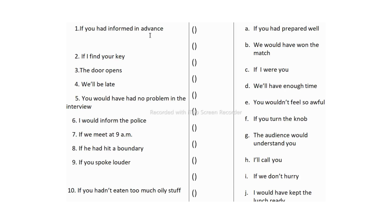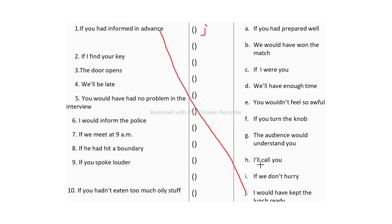For the first one: 'If you had informed in advance' — match with 'I would have kept the lunch ready.' This is third conditional (answer: j). For the second one: 'If I find your key' — match with 'I will call you.' Answer is h. Full sentence: 'I will call you if I find your key' — simple present + future simple, so this is first conditional.